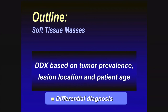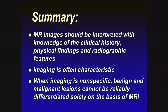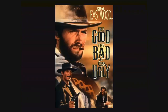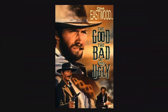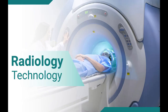In summary, MR imaging should be interpreted with knowledge of the clinical history, physical findings, and radiographic or sonographic features. Imaging is often characteristic, but when non-specific, benign and malignant lesions cannot be reliably differentiated based solely on MR in isolation. I like to think of soft tissue tumors like Clint Eastwood's old movie: the good, the bad, and the ugly — if I know what it is, that's good; if I don't, I always think of things that could be bad, and by doing that I make sure things never get ugly.